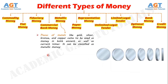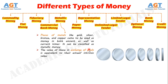Number 5: Metallic Money. Pieces of metals like gold, silver, bronze, and copper came to be used as money in both ancient as well as current times, and can be classified as metallic money. The value of these in exchange of goods is equivalent to their actual or intrinsic value. Metallic money can be categorized into full-bodied coins and token coins.